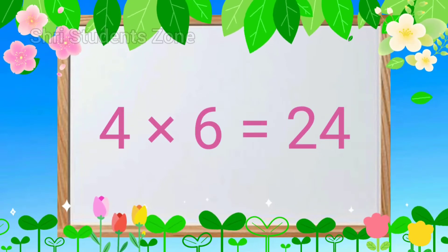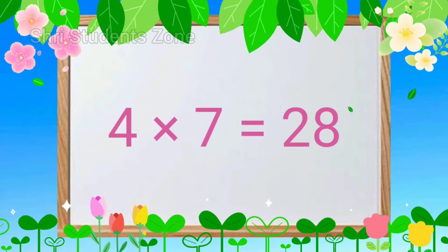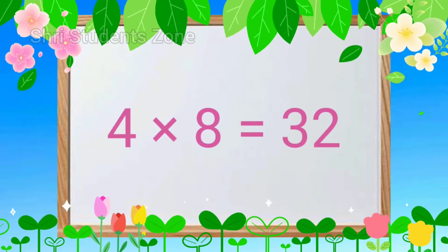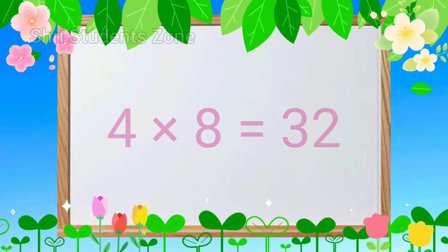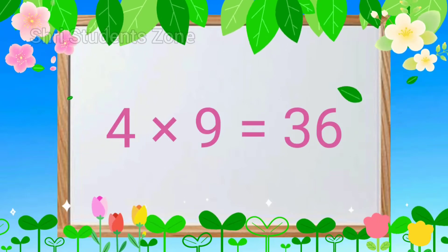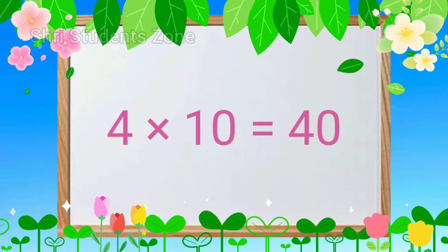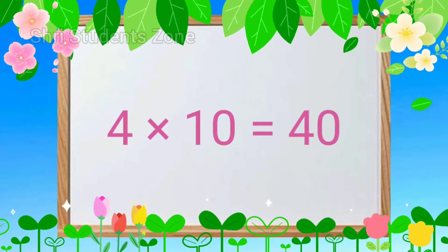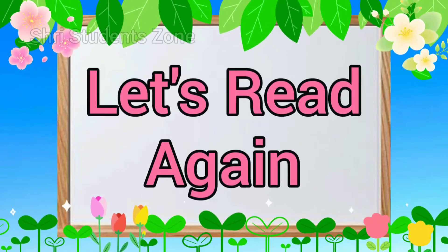4-6s are 24, 4-7s are 28, 4-8s are 32, 4-9s are 36, 4-10s are 40. Let's read again.